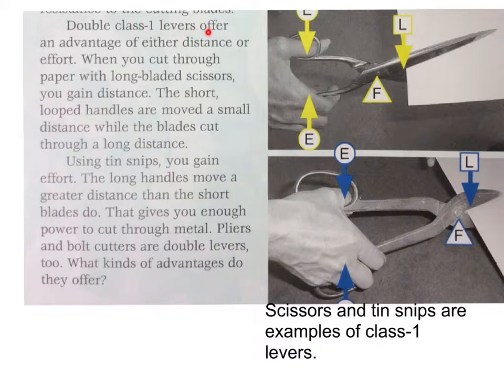Double class 1 levers offer an advantage of either distance or effort. When you cut through paper with long bladed scissors, you gain distance. The short, looped handles are moved a small distance while the blades cut through a long distance. Using tin snips, you gain effort. The long handles move a greater distance than the short blades do. That gives you enough power to cut through metal.